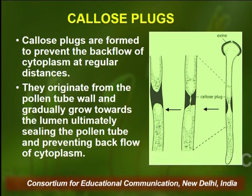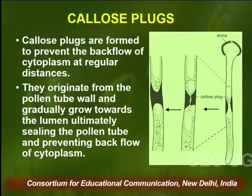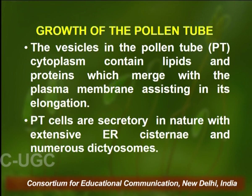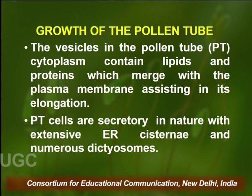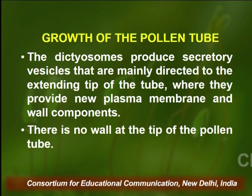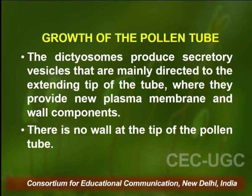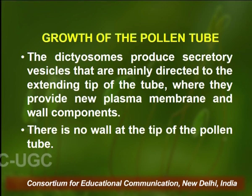Callose plugs are a very characteristic feature of pollen tubes; they originate from the pollen wall and then gradually grow towards the lumen, ultimately sealing the pollen tube and preventing backflow of the cytoplasm. The vesicles in the pollen tube cytoplasm contain lipids and proteins which merge with the plasma membrane assisting in its elongation. Pollen tube cells are secretory in nature and have extensive endoplasmic reticulum cisternae and numerous dictyosomes.